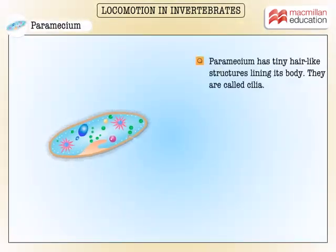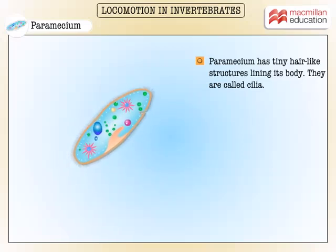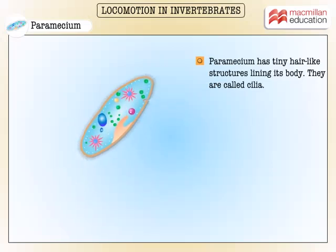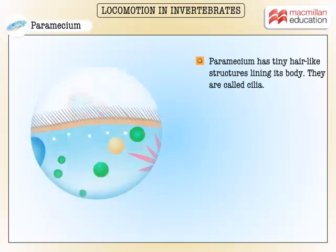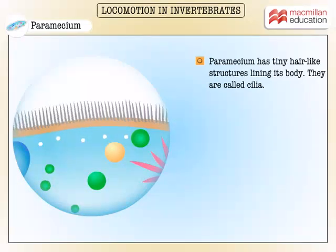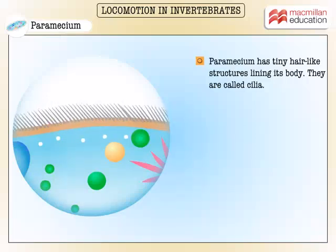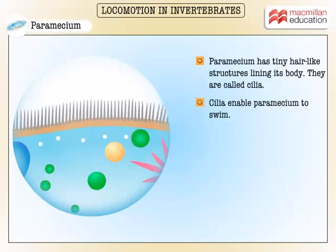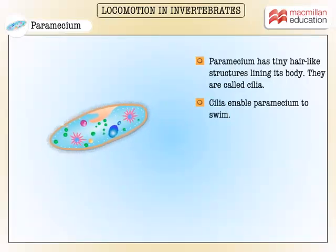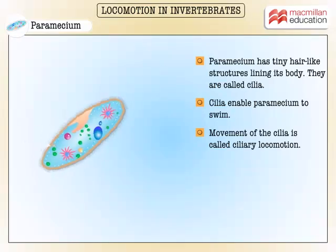The paramecium has tiny hair-like structures lining its body. They are called cilia. Watch the wave-like movement of cilia — this movement allows the paramecium to swim. This movement of the cilia is called ciliary locomotion.